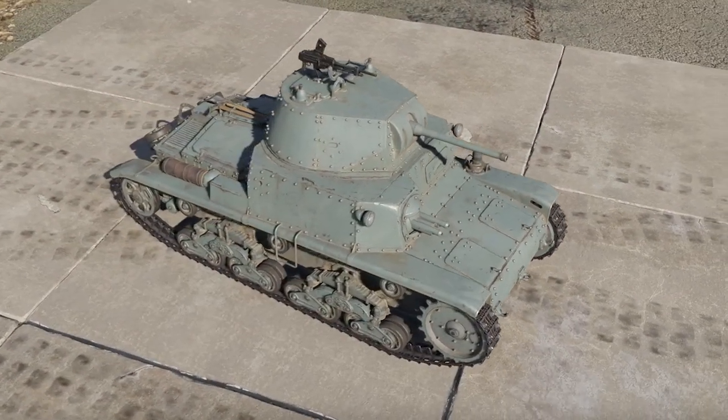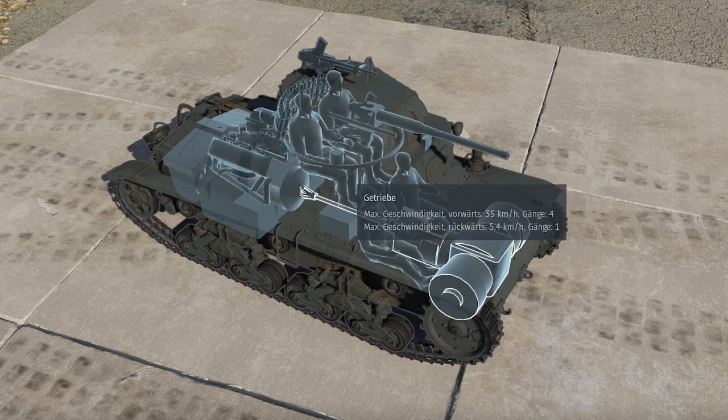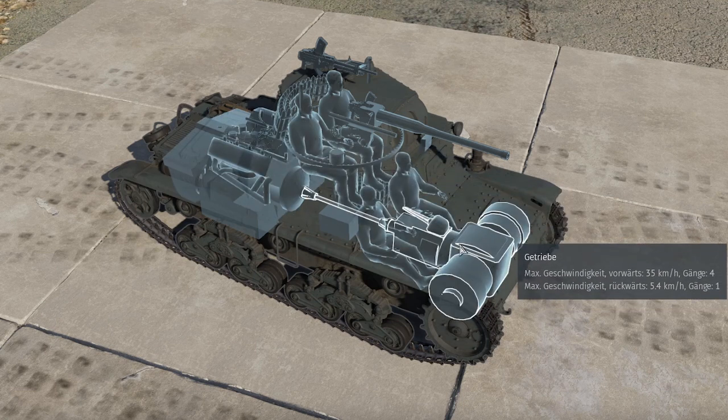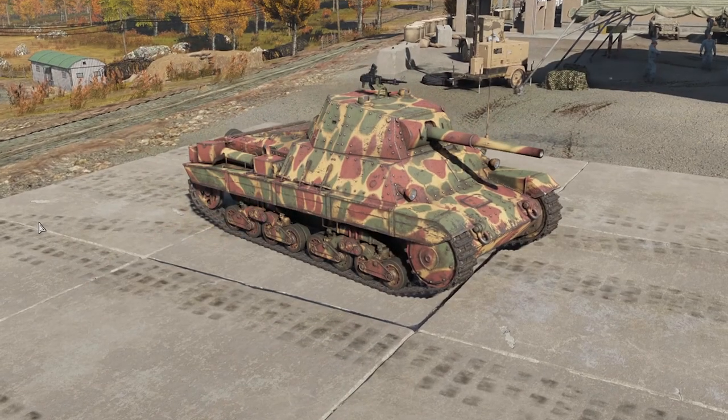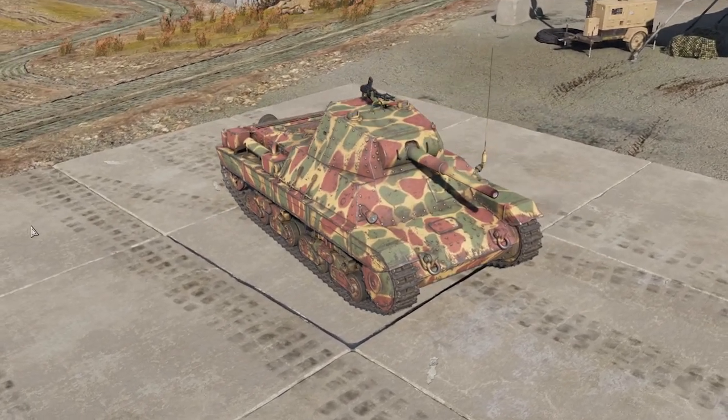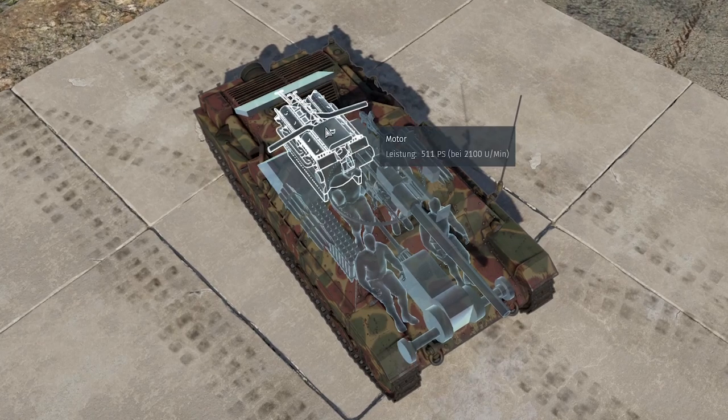Italien setzte von Anfang an auf das TransAxel-System. Man kann das am Beispiel des Carro Amato M1340 gut sehen. Da sitzt der Motor hinten und Getriebe und Antriebsrad finden sich vorn, durch die Wanne läuft die Antriebswelle. Und dieses System wird für die mittleren Panzer in Italien den ganzen Krieg über durchgehalten. Konsequent keine Ausreißer. Und auch der nach italienischer Klassifikation schwere Panzer, der P2640, hatte dieses System verbaut.